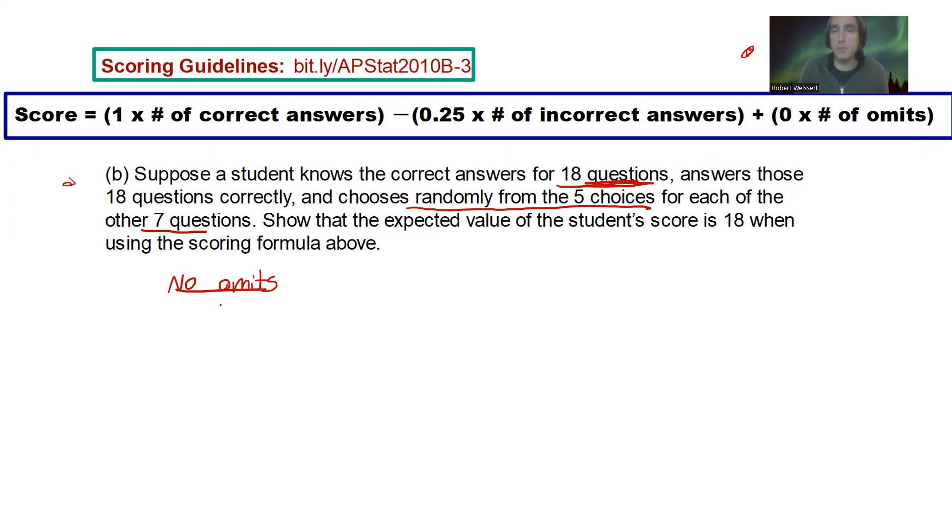Chooses randomly from the five choices for each of the other seven remaining questions. So, it says, show that the expected value of the student's score is 18 when using the scoring formula above. Well, that's funny. We'd think it'd be more than 18, right? Because they're going to get 18 right. So, let's think about what's going to happen here. There are seven questions, right? Seven remaining questions to get to that 25.